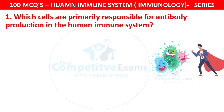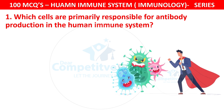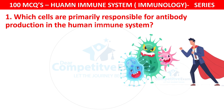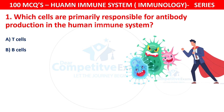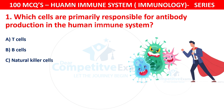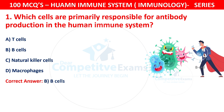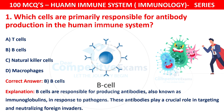Question 1. Which cells are primarily responsible for antibody production in the human immune system? Your options are T cells, B cells, natural killer cells, or macrophages. The correct answer is B — B cells. B cells are responsible for producing antibodies, also known as immunoglobulins. In response to pathogens, these antibodies play a crucial role in targeting and neutralizing foreign invaders.